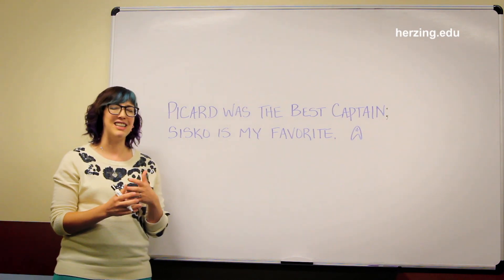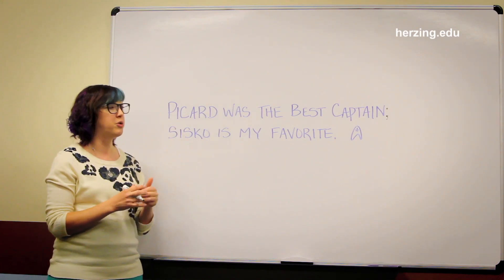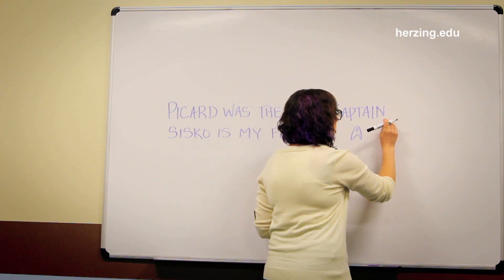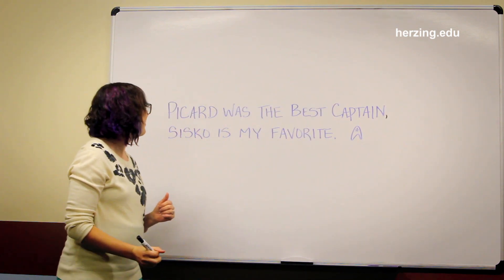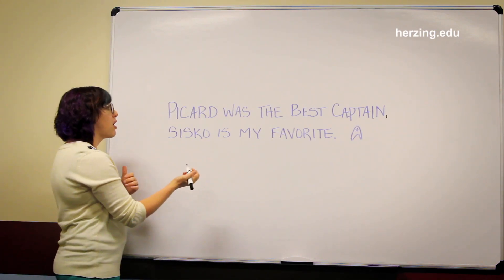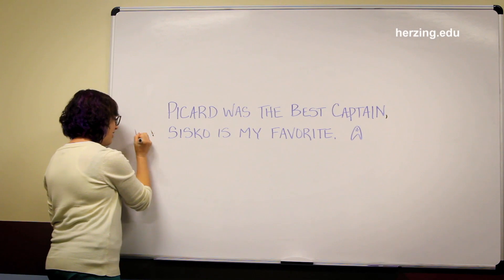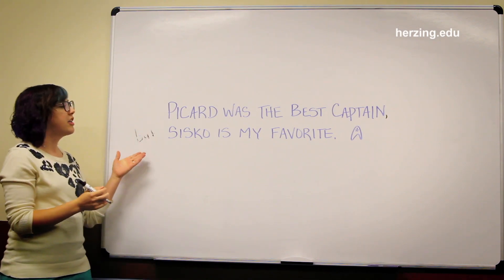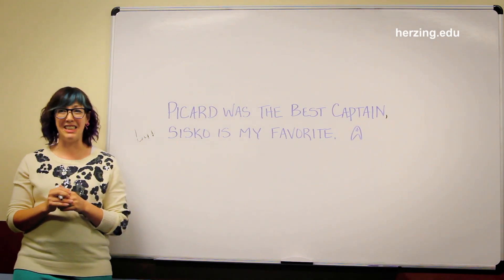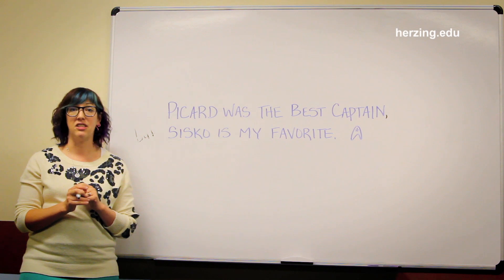Your third choice for fixing this, and to give your reader a little bit more information on how these two thoughts are related, is to turn one of your two independent clauses into a dependent clause. The easiest way to do this — we go back to having a comma there — is by adding a conjunction at the beginning of the second clause: "Picard was the best captain, but Cisco is my favorite." The conjunction tells us how these two thoughts are related. It also turns the second clause into a dependent clause — it no longer expresses a complete thought on its own; it needs the first clause to help it make sense.